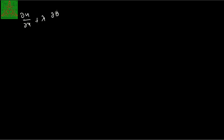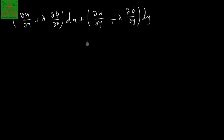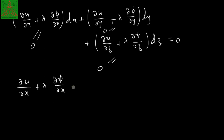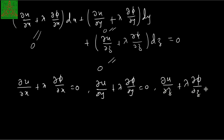we get: [(del u/del x) + lambda(del phi/del x)]dx + [(del u/del y) + lambda(del phi/del y)]dy + [(del u/del z) + lambda(del phi/del z)]dz = 0. This gives us three equations: del u/del x + lambda(del phi/del x) = 0; del u/del y + lambda(del phi/del y) = 0; and del u/del z + lambda(del phi/del z) = 0.